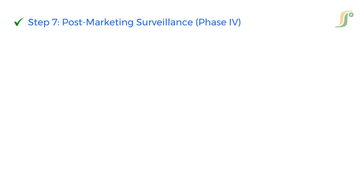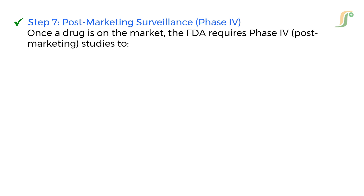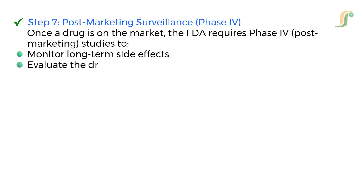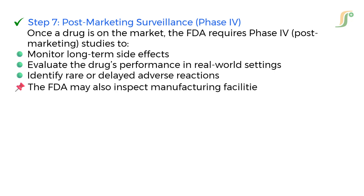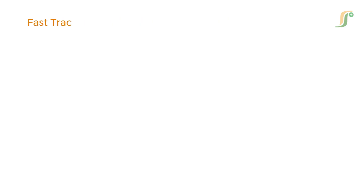Step 7: Post-Marketing Surveillance — Phase 4. Once a drug is on the market, the FDA requires Phase 4 post-marketing studies to monitor long-term side effects, evaluate the drug's performance in real-world settings, and identify rare or delayed adverse reactions. The FDA may also inspect manufacturing facilities to ensure ongoing CGMP compliance.